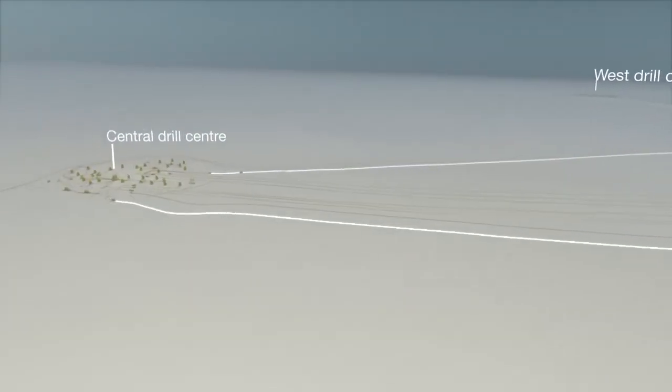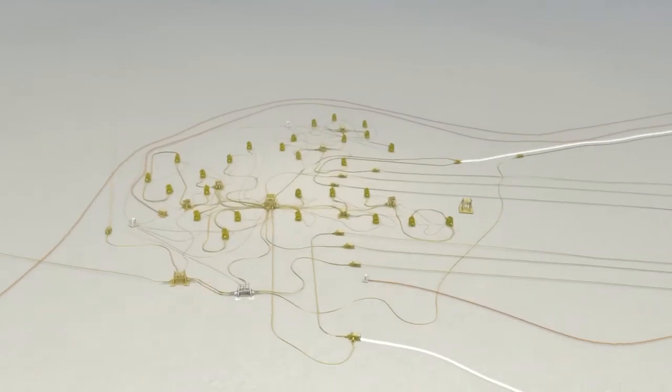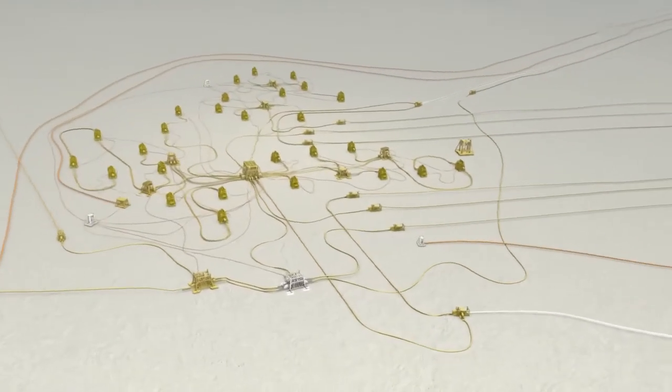In all there will be 17 kilometers of new flowlines. At the central drill center there will be one additional manifold, two FTAs, and two new suds.